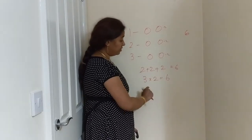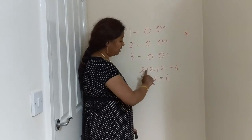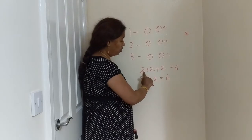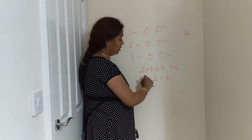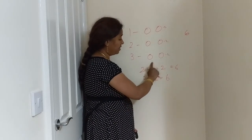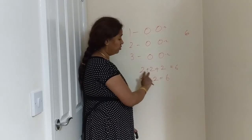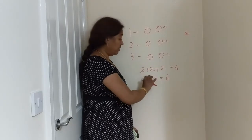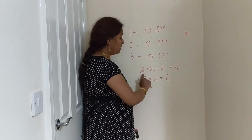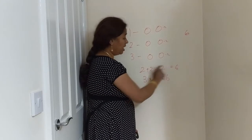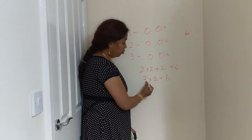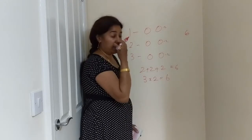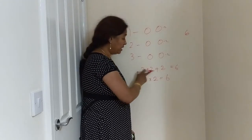If you add the answer, you can add 2 three times: 1, 2, 3 — that is 2 add 2 add 2, which equals 6. That is 3 times 2. So 3 times 2 is repeated addition.